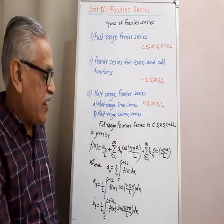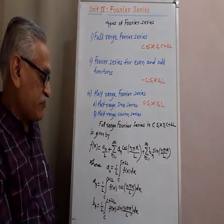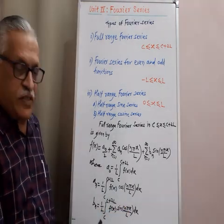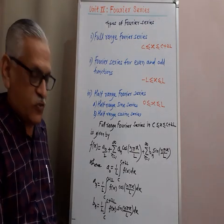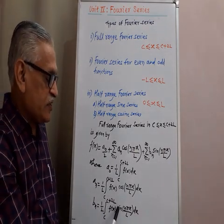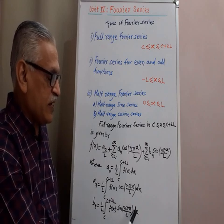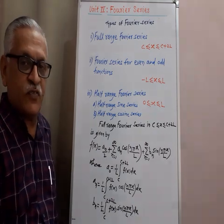And the third Fourier coefficient, bn, equals 1 by L integral from C to C plus 2L of f(x) sin(n pi x by L), its integration with respect to x.